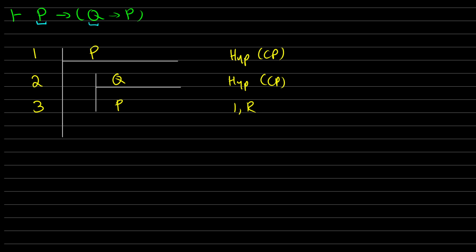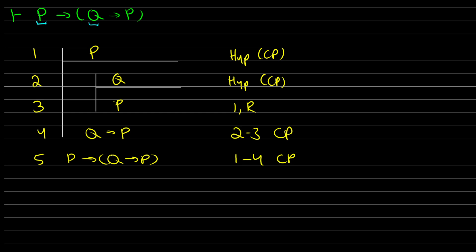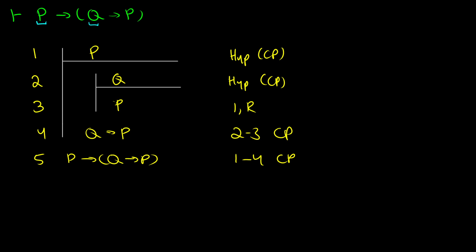Now we have a proof from Q to P (line two to three), so we can pull Q→P out in line four. This is from lines two to three, a conditional proof. Then on line five, we assumed P and we got Q→P from it, so using a conditional proof we now have P→(Q→P), from lines one to four. That's how we prove P→(Q→P).